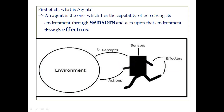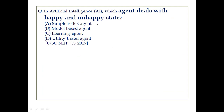Going back to the question: which agent deals with happy and unhappy state? Simple reflex agents work on the current percept and do not rely on the historic percept sequence. Model based agents maintain an internal state reflecting how things are happening in the world. Learning agents work on the principle of experience so they can adopt new situations and act accordingly. Finally, utility based agents work on the basis of preference to maintain happy and unhappy states. So our answer will be D — utility based agent.